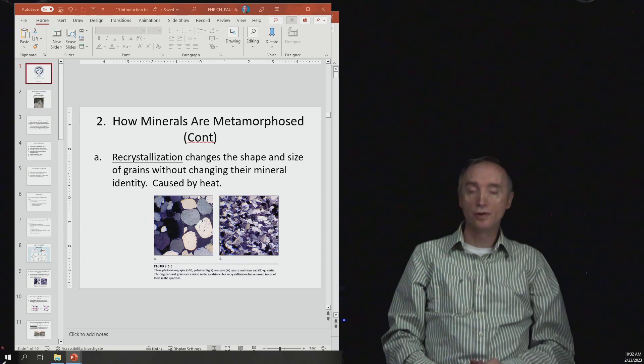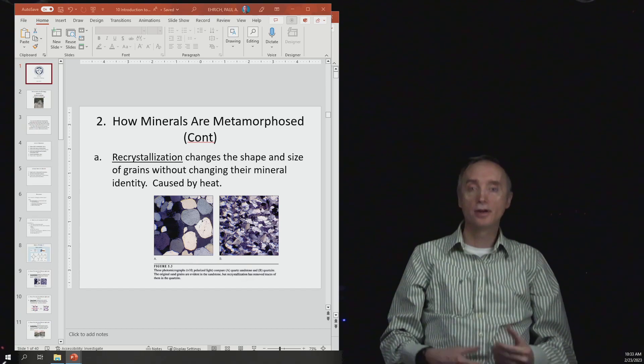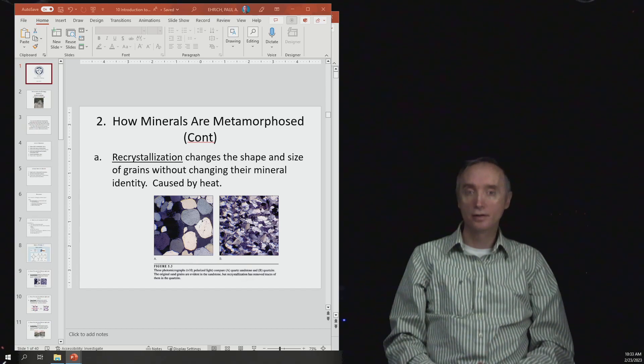They're going to become more compact and you're going to end up with the metamorphic rock quartzite. Quartzite is still made of quartz, so the mineral did not change its identity, but it's now in a more compact form.